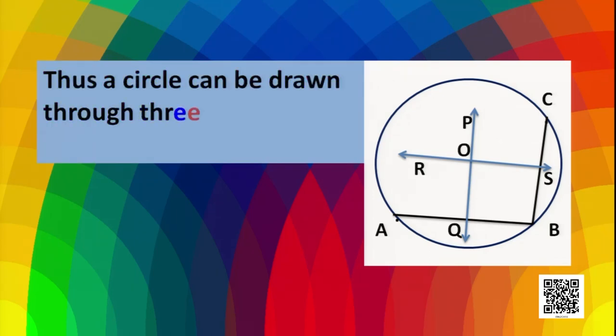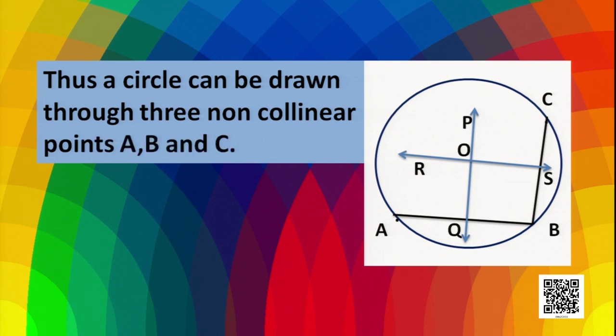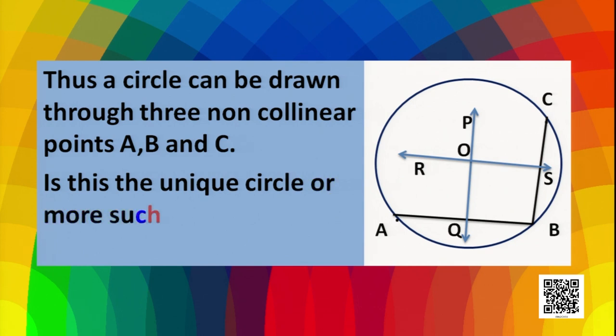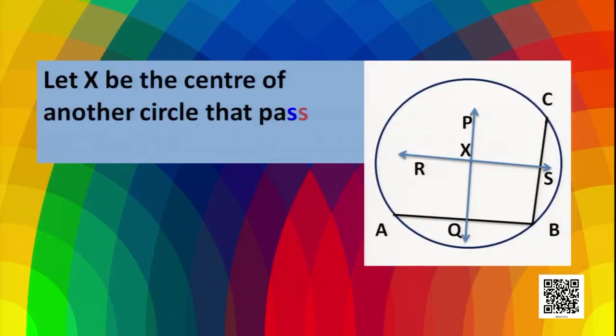By drawing this circle, we can say that a circle can be drawn through three non-collinear points A, B and C. Now, is this the only circle that passes through A, B and C? To prove the uniqueness of this circle, let's assume another circle passes through A, B, C. If a second circle exists, then there must be a second center, something other than O. Let X be the center of another circle passing through A, B and C.